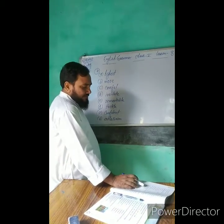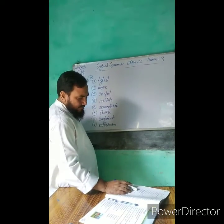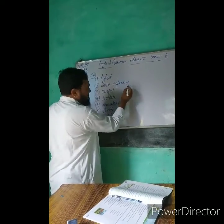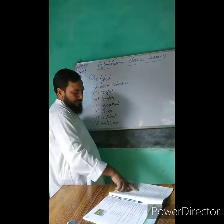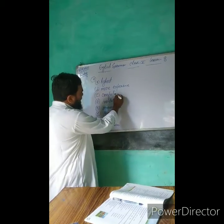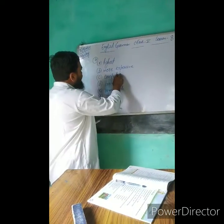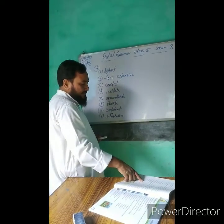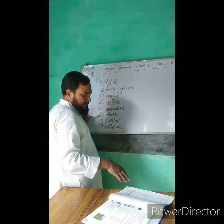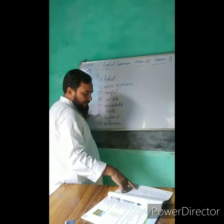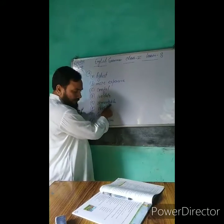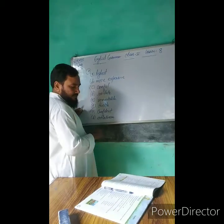A. Mount Everest is the highest peak in the world. B. This book is more expensive than the one we saw yesterday. C. Be careful when you cross the road. D. That person is very irritated — he gets angry easily. E. Vijaya is a remarkable woman. She is good at so many things.